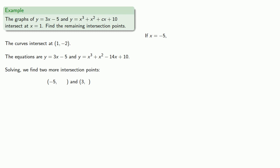If x is equal to negative 5, we can use either equation to find y. Let's use the harder equation because we'd rather do more work than less work. What was that? Oh, maybe we'll use the easier equation, y equals 3x minus 5. We know what x is.